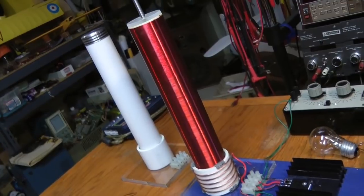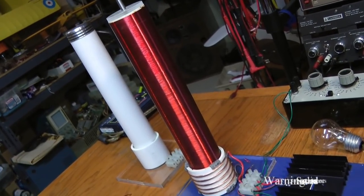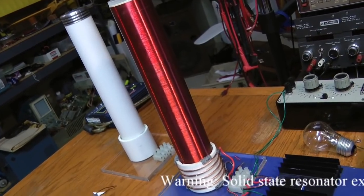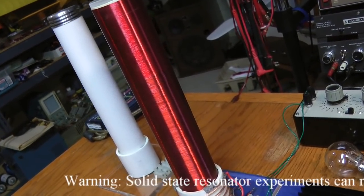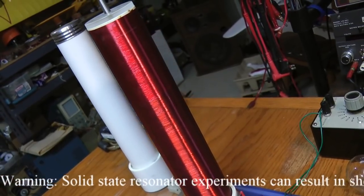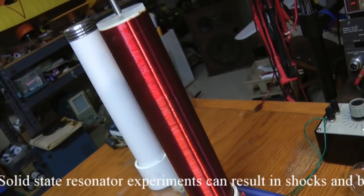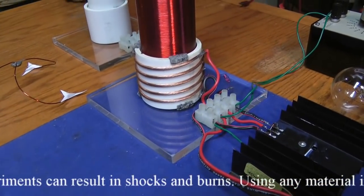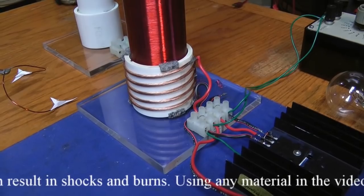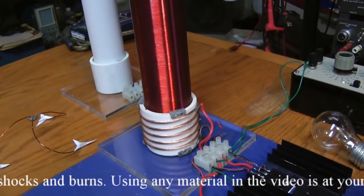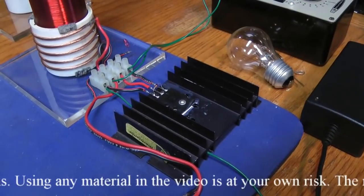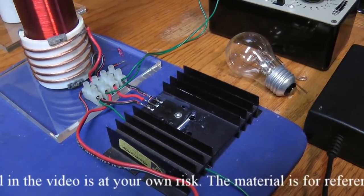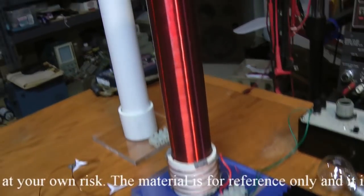This is one I just finished a while back and haven't taken the time to video yet. This has about a thousand turns of number 30 wire and a primary of five turns or so of heavy wire. Same circuit I used before - this is the Slayer circuit using the MJL 21194. Let me fire this one up.